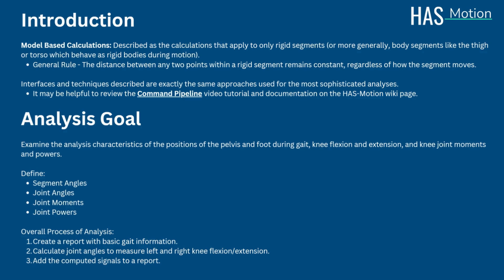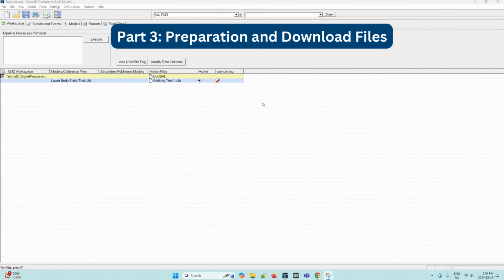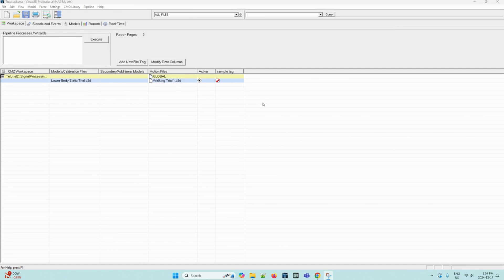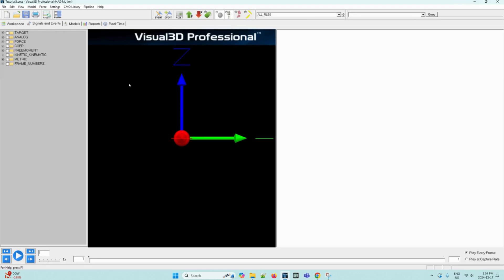First, make sure to have downloaded the tutorial3.cmz file from the tutorial wiki page. I have this loaded into the Visual 3D Application Workspace already as seen. You can load this in as well by selecting the open file icon on the toolbar here. Once loaded in, we can navigate to the Signal and Event Processing tab to visualize an animation of the model based on the movement data and the model that was applied to it.